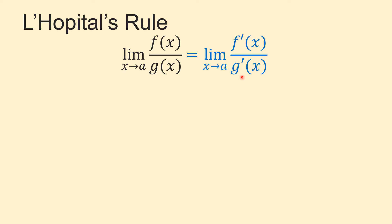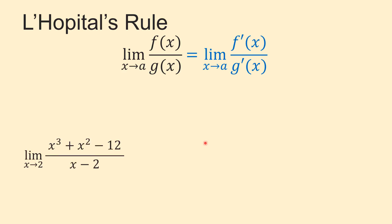As the first example, we want to find the limit of (x³ + x² − 12) over (x − 2) as x approaches 2.